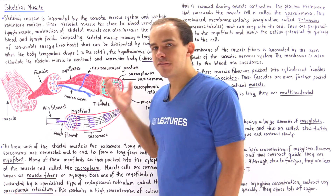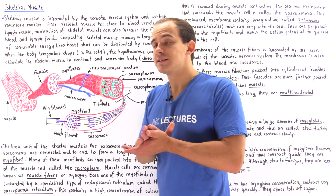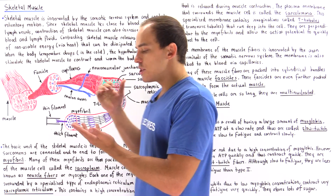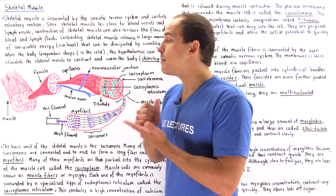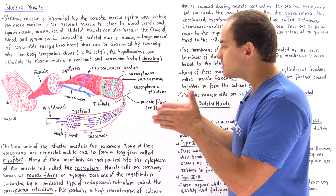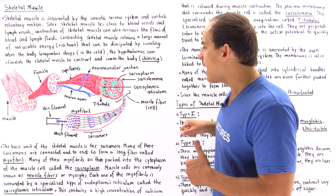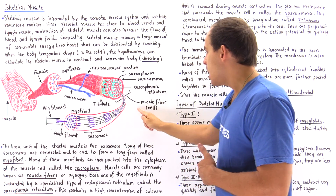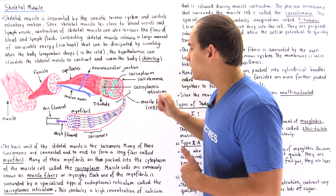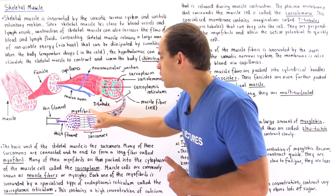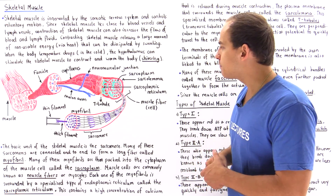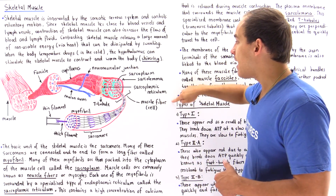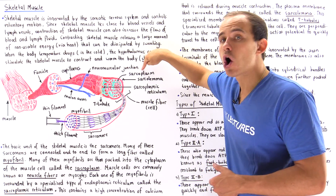Many of these myofibrils are placed inside the cytoplasm of the muscle cell. The muscle cell is also known as the muscle fiber or the myocyte, and inside our muscle cell we contain many of these myofibrils. If we take a cross section of the muscle cell, we see many red regions which are our myofibrils.